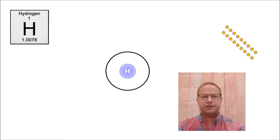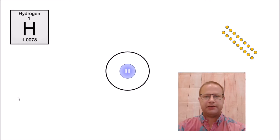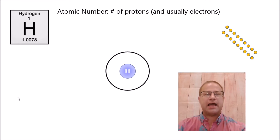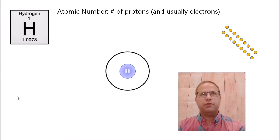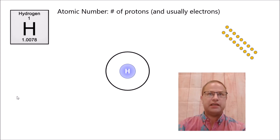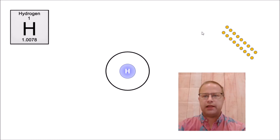First let's start out with hydrogen. Here we have the periodic symbol for hydrogen, H, and we know that the top number — the whole number — is something called the atomic number. The atomic number is the number of protons that atom has, but because the number of protons and electrons is equal for most atoms, we can also infer that it's the number of electrons. So hydrogen has one electron, and that one electron fits in the first shell.